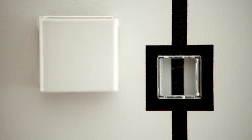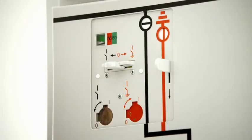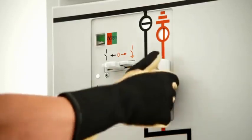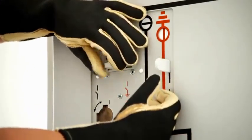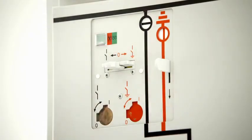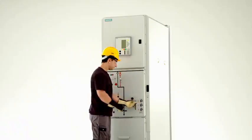The mechanical interlocking between the circuit breaker and the three position disconnector also makes it impossible to operate the three position disconnector. This prevents mal-operation and is a definite plus for personal safety.